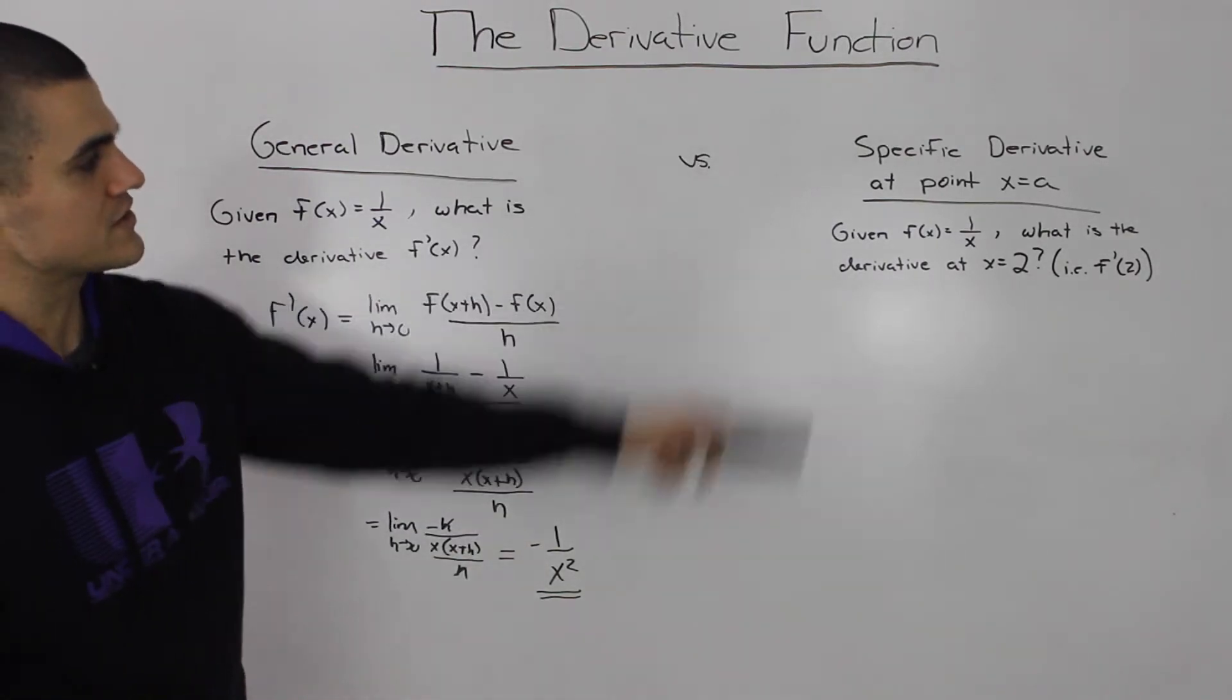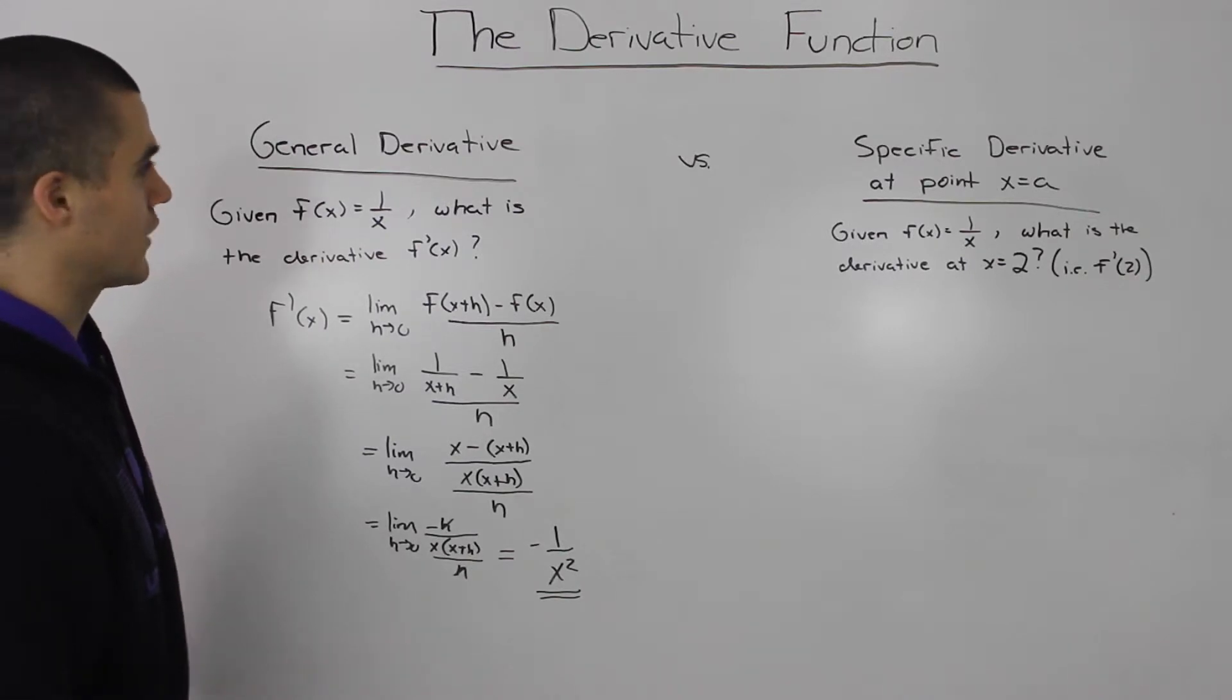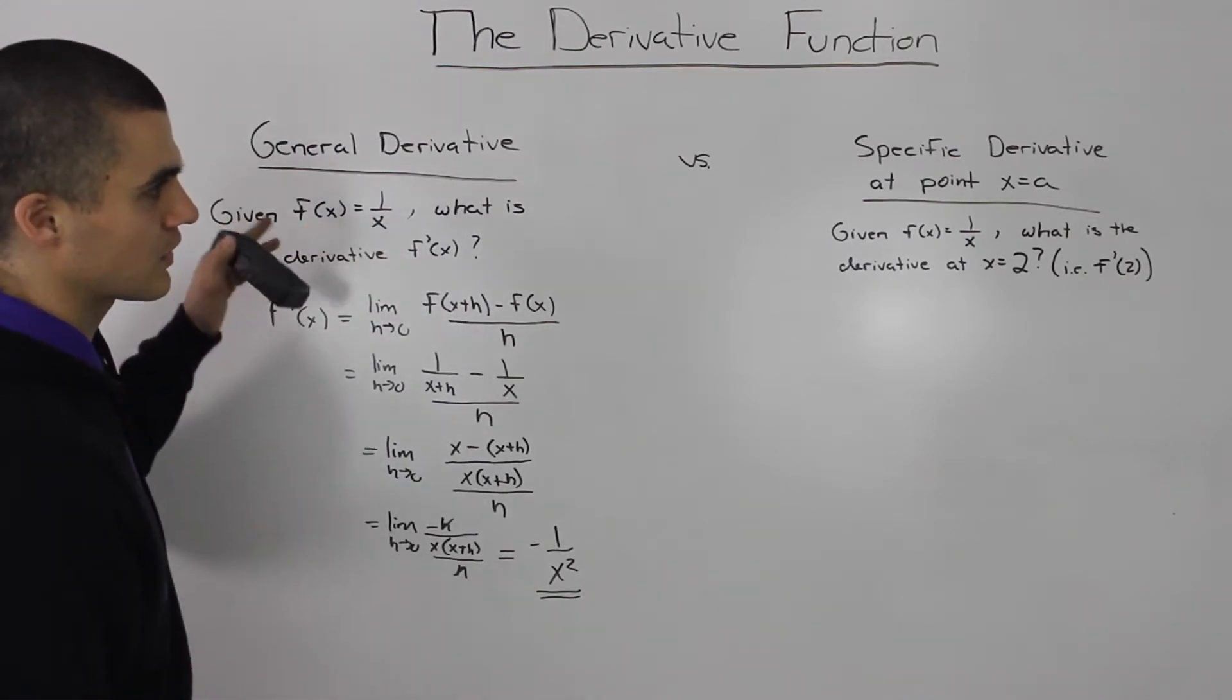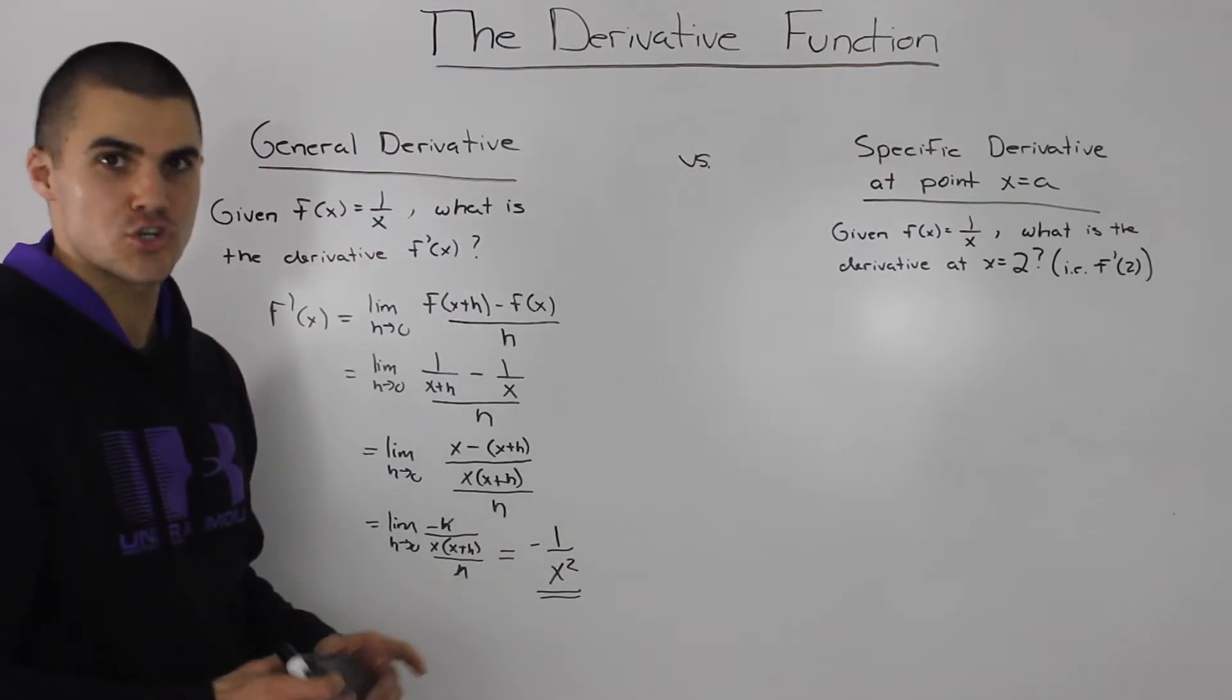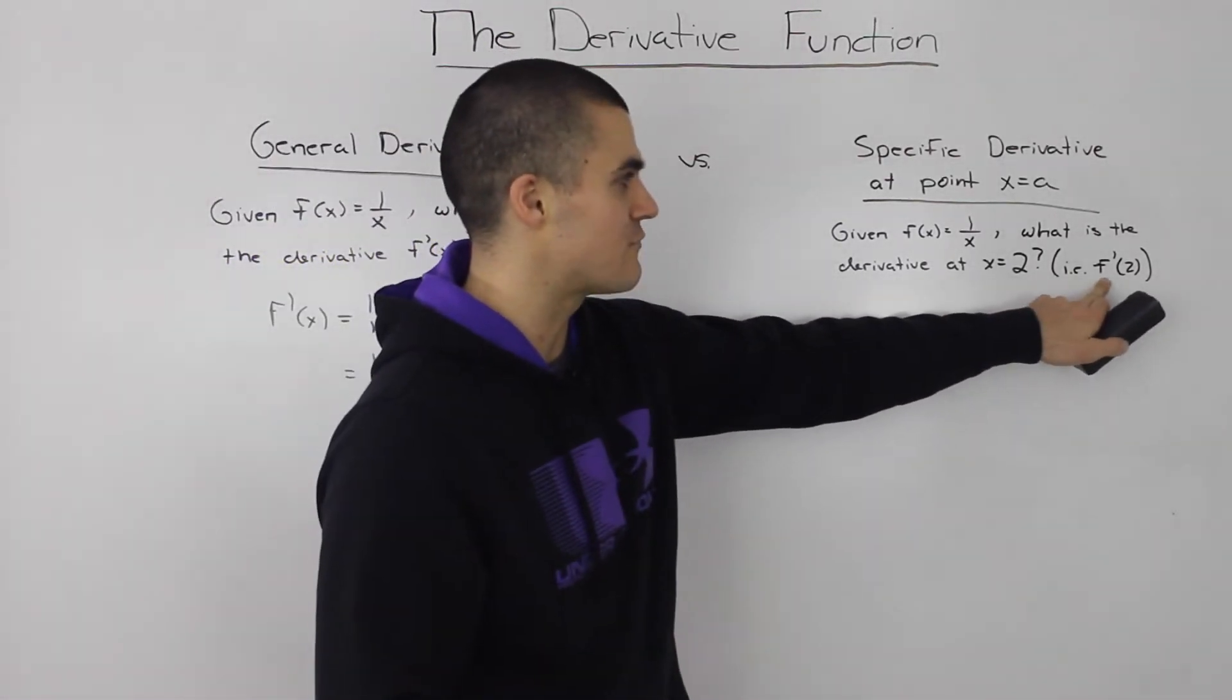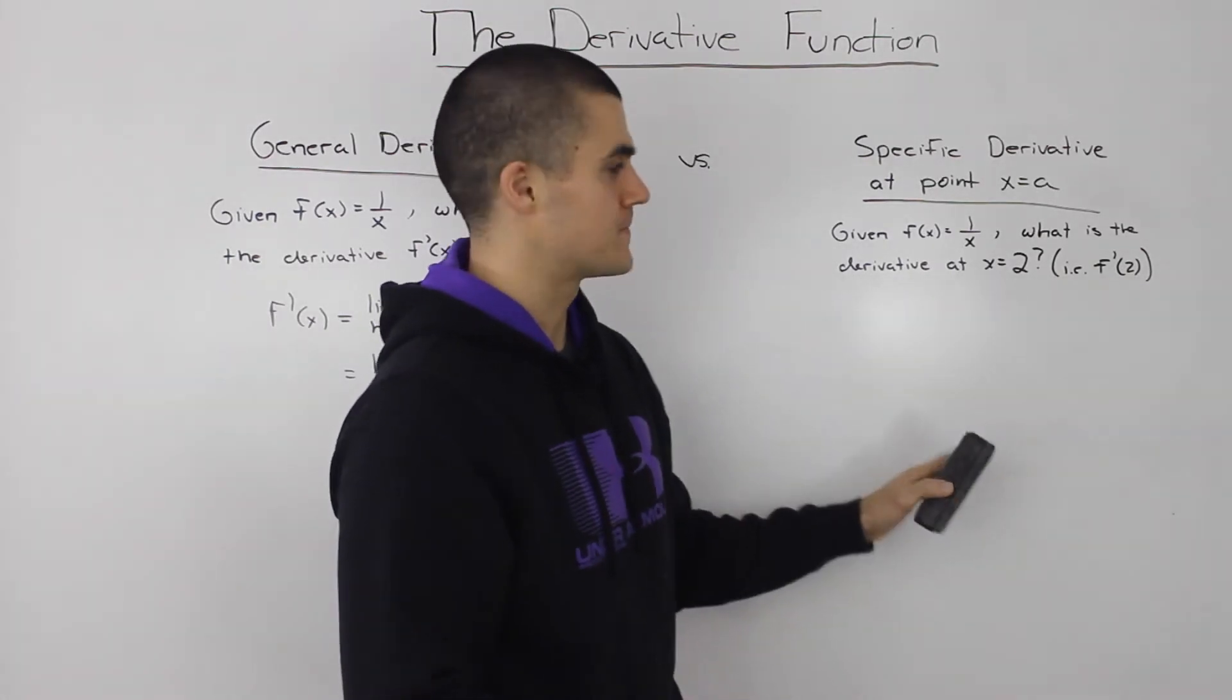So now let's move on to this question. Given f of x equals 1 over x, the same function that we were given here, what is the derivative at x equals 2? Or another way to write this is, what's f prime of 2?